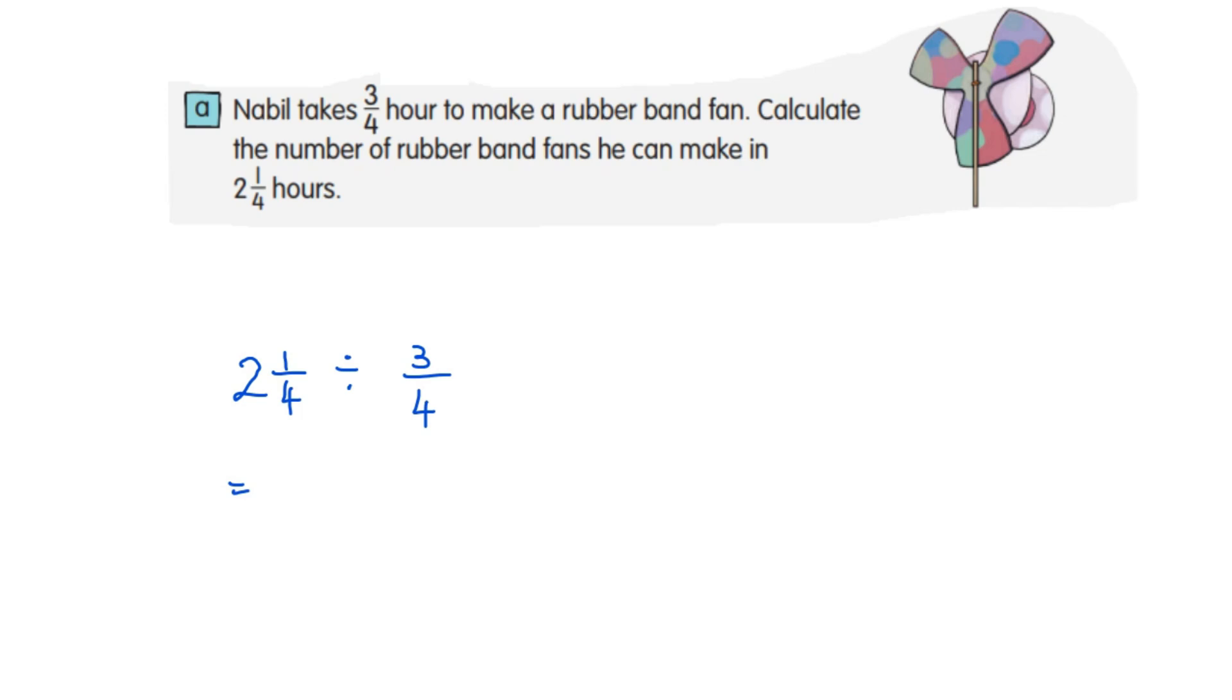Convert 2 1/4 to improper fraction, you'll get 9/4 divided by 3/4. 9/4 divide will become multiply, and switch 3/4, it will be 4/3. Now do cancellation. The answer is 3 rubber band fans.